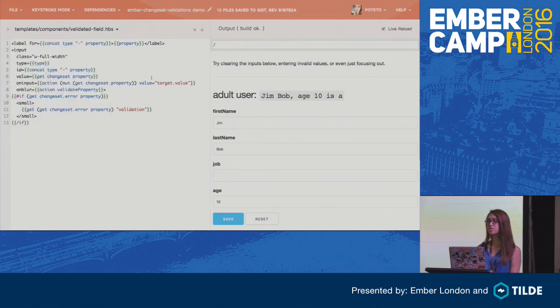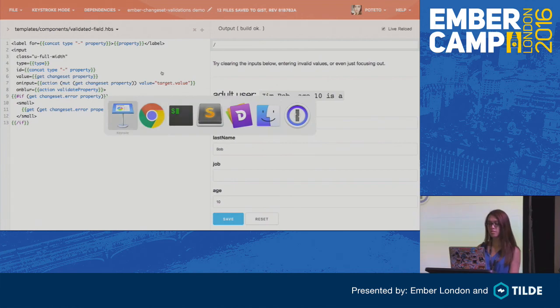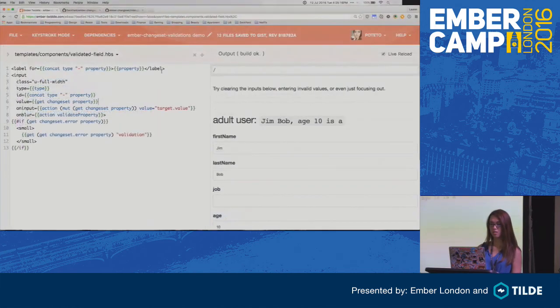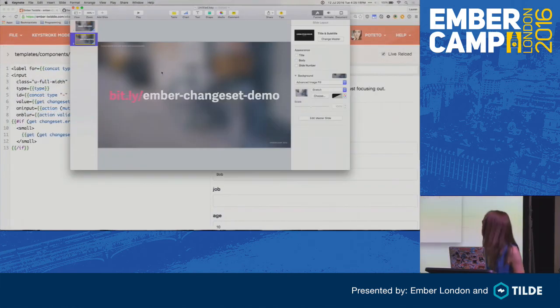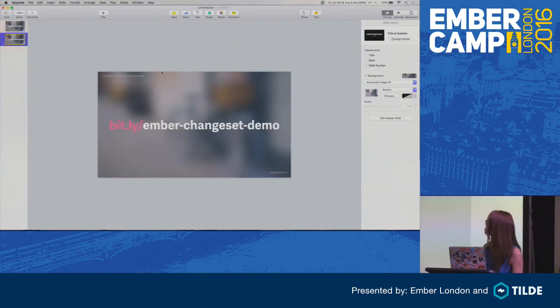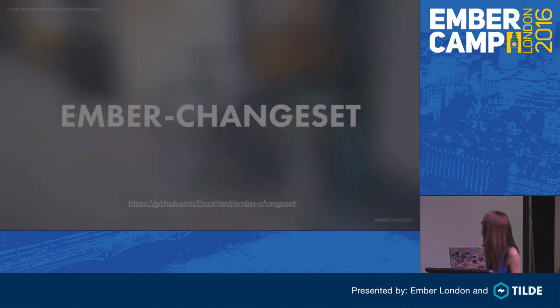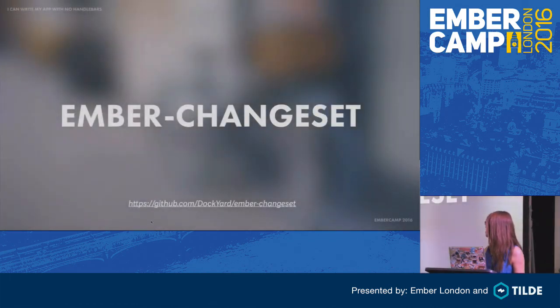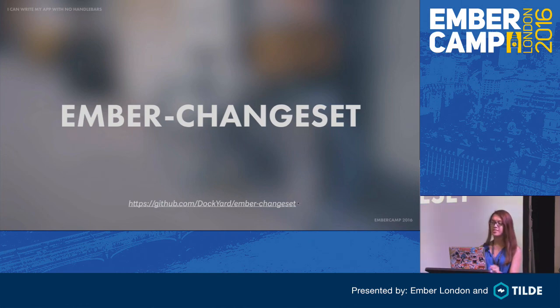If you're interested, you can try it out. The link to the add-on is on GitHub under the Dockyard organization — it's ember-chainset. I hope you find it useful when you're trying to deal with validations. Thank you.